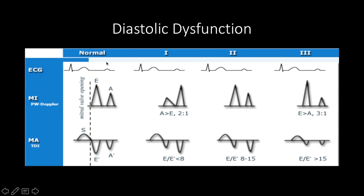Grade 1 diastolic dysfunction, also known as impaired relaxation, occurs because there is abnormal relaxation of the left ventricle. The atrial contraction compensates, hence the increased velocity of the A and A' waves. The left atrial pressure is normal in impaired relaxation, and so patients should not have signs of acute heart failure.